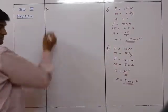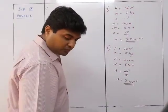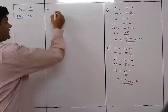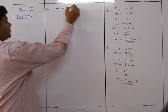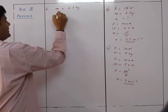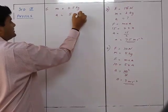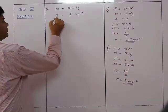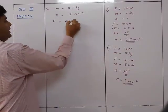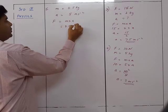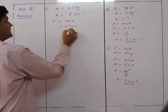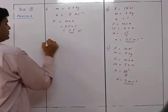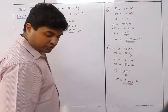Question 5: Calculate the magnitude of force which, when applied on a body of mass 0.5 kg, produces an acceleration of 5 meter per second squared. Force equals m times a equals 0.5 times 5 equals 2.5 Newton.